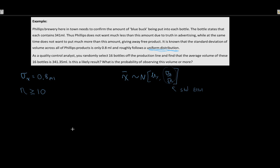We have our initial context for the question. As a quality control analyst, you randomly select 16 bottles off the production line. We said we needed a sample size bigger than 10; we have 16, so we're good. We find that the average volume of these 16 bottles — a sample size of 16 — gives us a calculated sample average of 341.35 mL. It looks like we're overfilling, getting an average bigger than the target of 341.